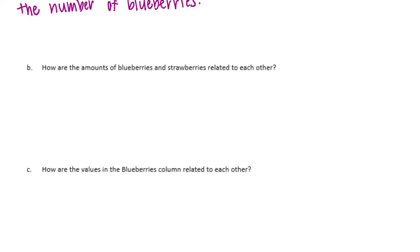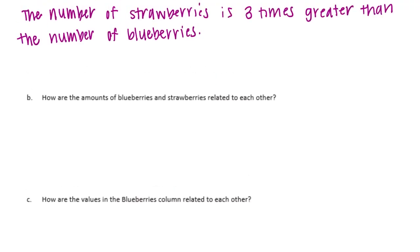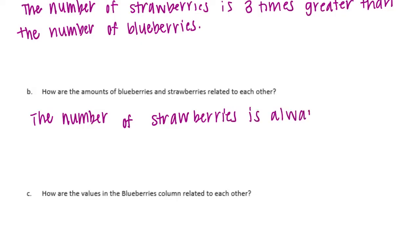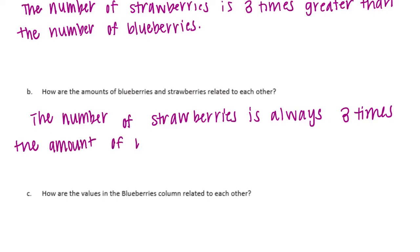Part B: How are the amounts of blueberries and strawberries related to each other? The number of strawberries is always 3 times the number of blueberries. This is an equivalent ratio — it's always 1 to 3.